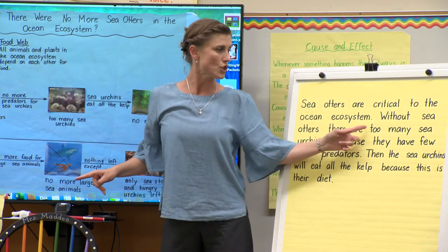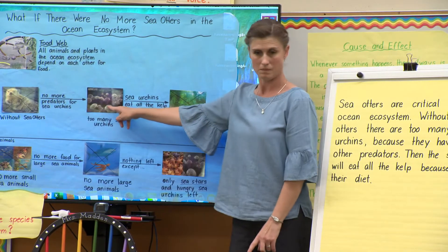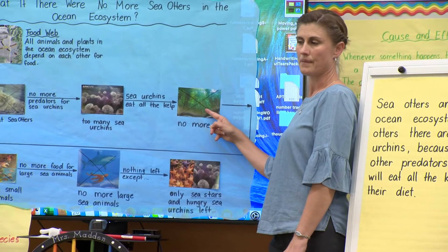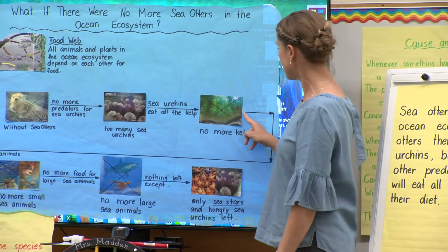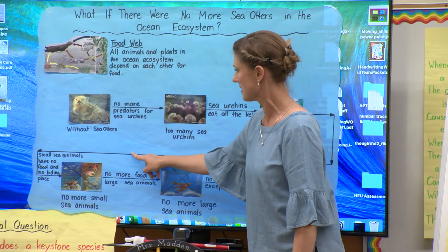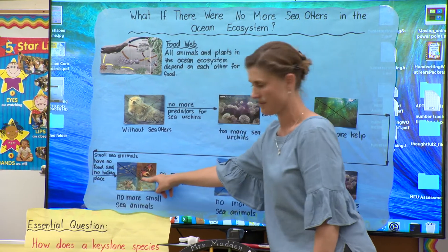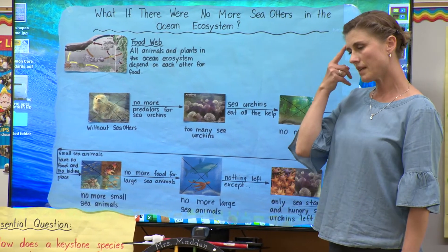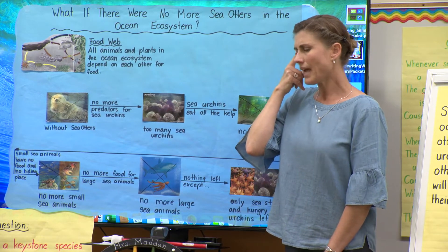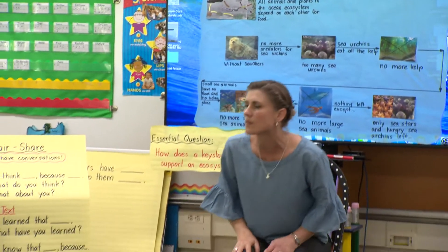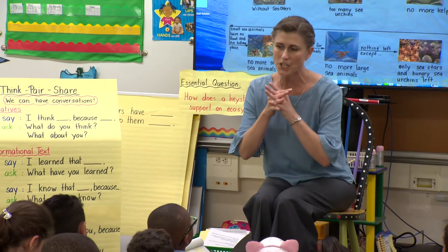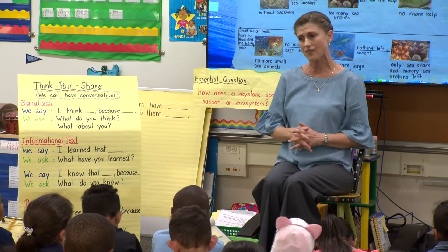Without sea otters, there are too many sea urchins. And then the sea urchins eat all the kelp. So now we need to think about what do we need to write next. Think in your brain — what happens next? What do we need to write? Boys and girls, I need you to look at me for a second. Because when we write a causal explanation, we also need to use the language features of a causal explanation.